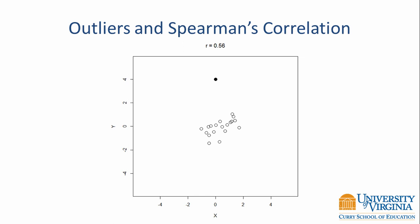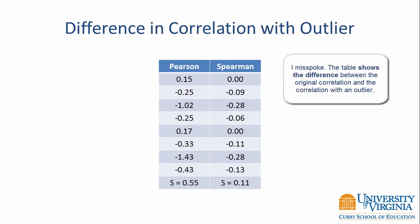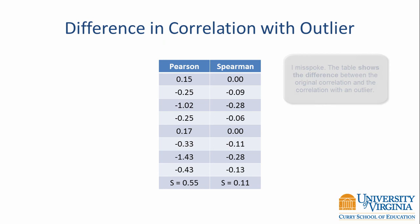It should be evident that the Spearman correlation is less affected by outliers than the Pearson correlation. For this reason, we say that Spearman's correlation is robust to outliers. The table showing Pearson and Spearman correlations for each data set with bivariate outliers confirms this: the standard deviation of the Pearson correlations is quite a bit larger than the standard deviation of the Spearman correlations, indicating that Spearman's correlation is less affected by bivariate outliers.